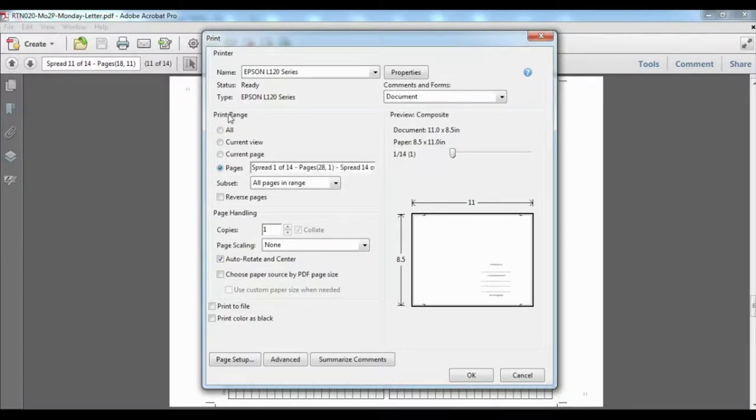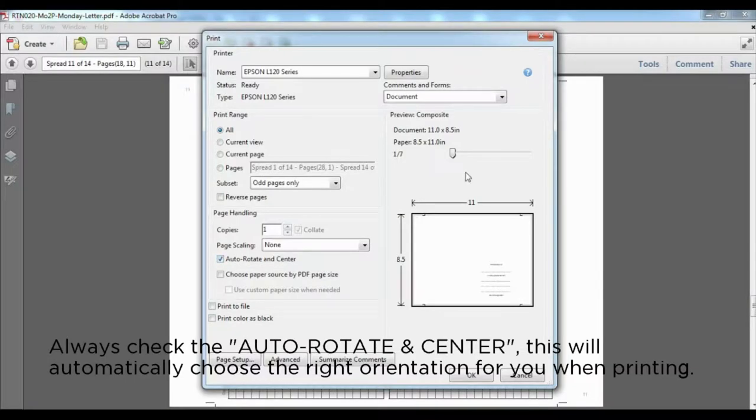Now under print range, select all, and under the subset, select odd pages. Page scaling, none. Auto rotate and center is checked.